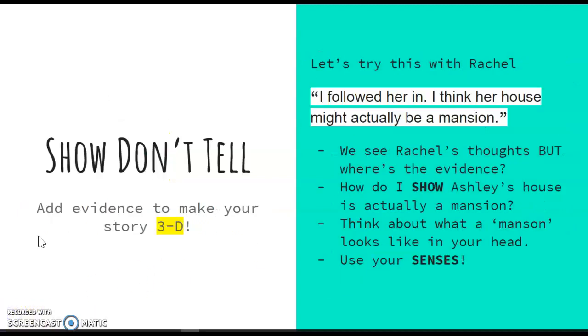Thinking back to our mentor text about Rachel and Ashley and their awkward play date, let's try this with Rachel. Rachel could have said, I followed her in. I think her house might actually be a mansion. Now she did say this and we see Rachel's thoughts, but where's the evidence? How do we show that Ashley's house is actually a mansion? I want you to think about a mansion, what it looks like in your head. Use your senses. What does a mansion look like? What does it sound like? Let's take a look and let's see what Rachel does in order to show that Ashley's house is a mansion instead of just telling us.